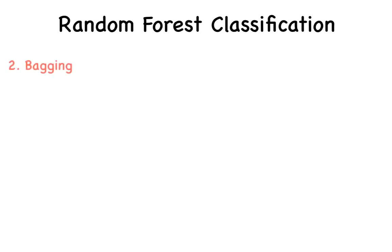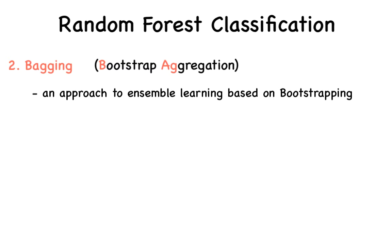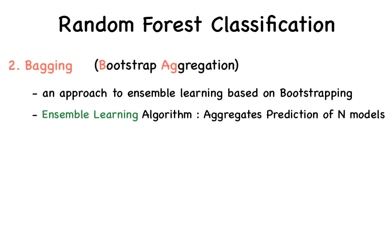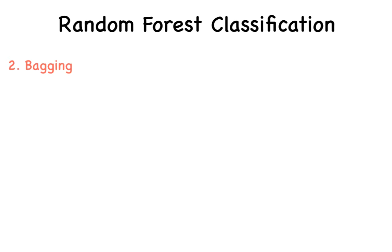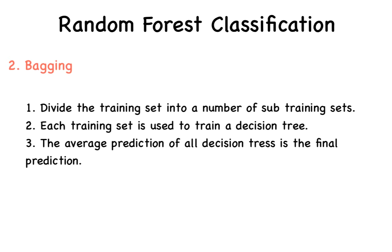We now move on to bagging. Bagging stands for bootstrap aggregation. It is an approach to ensemble learning based on the bootstrapping technique. An ensemble learning algorithm is one which combines the predictions of similar models in order to compute its own prediction. Bagging is generally used with decision trees. Decision trees are structurally unstable. They are sensitive to data used during training. This means that minor changes in the training set can affect the structure and hence the predictions of the resulting tree. To perform bagging, we first divide the training set into a number of sub-training sets. Then, each training set is used to train a decision tree.